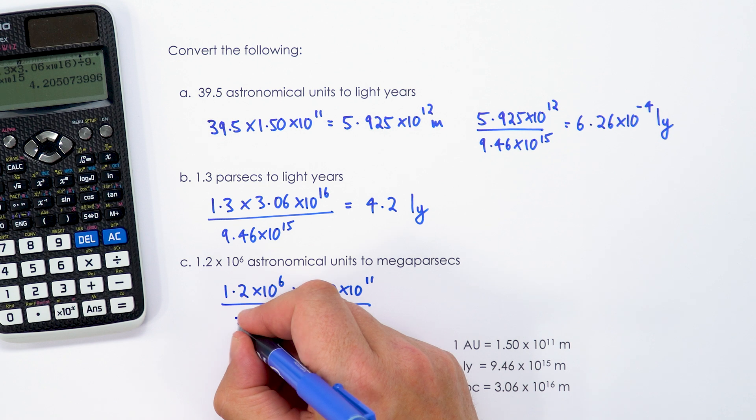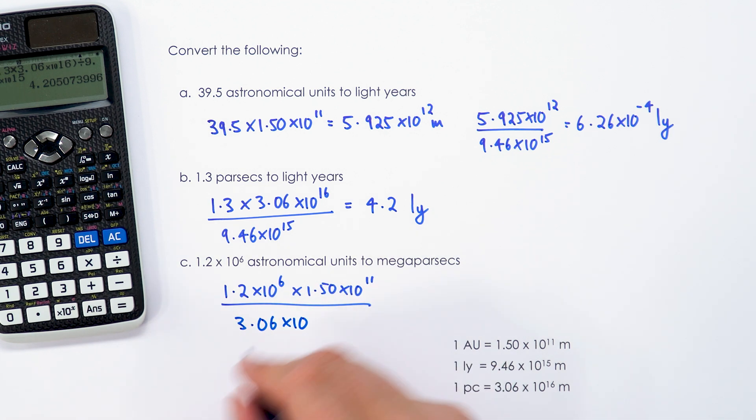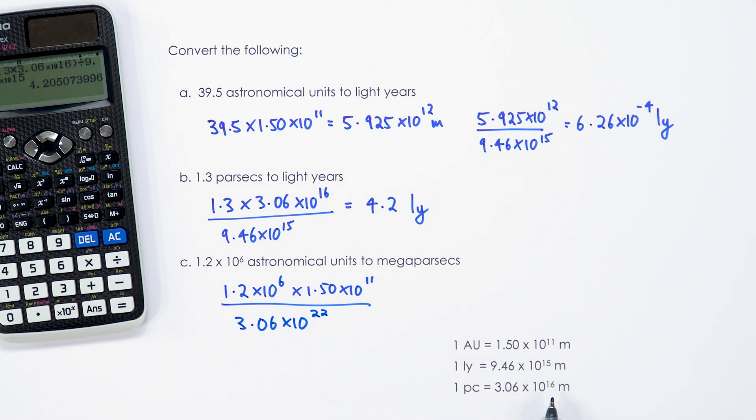And we can say, then, that's just equal to 3.06 times 10 to the 22, which is a million times bigger than just 1 parsec.